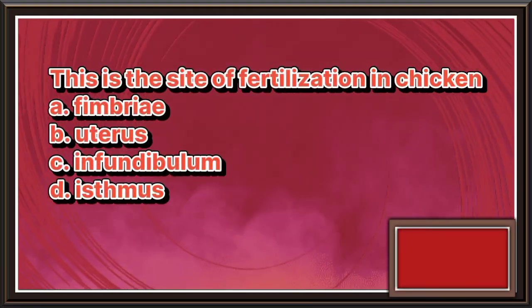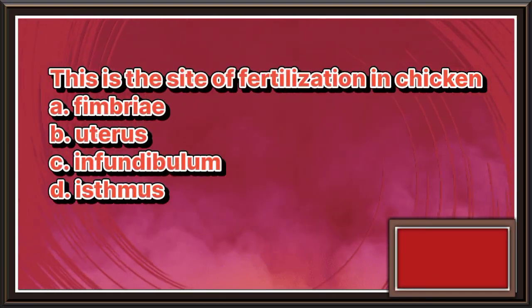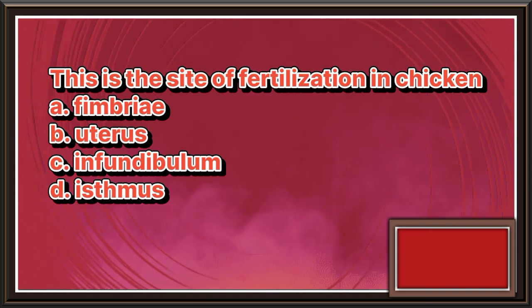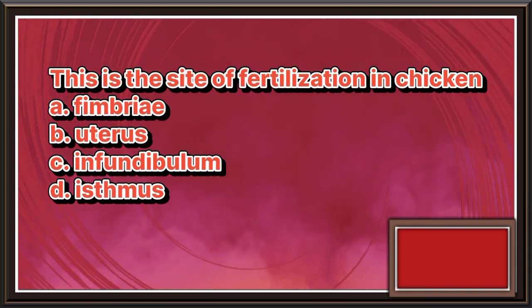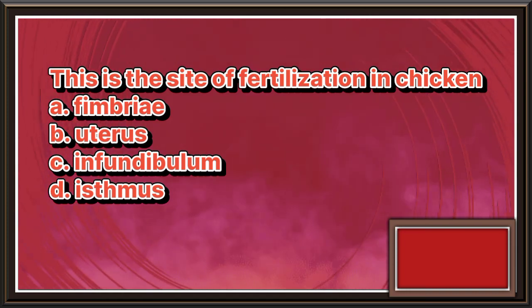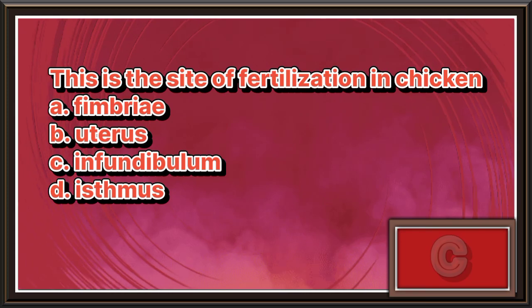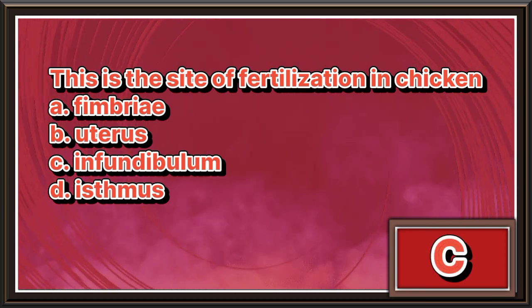This is the site of fertilization in chicken. A. Fimbriae. B. Uterus. C. Infundibulum. D. Isthmus. The answer is letter C.